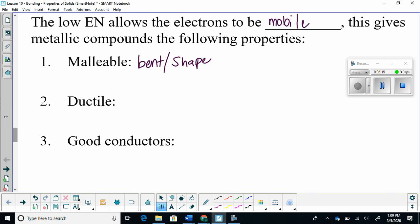We can bend and shape the metal. So things like wiring, that's why it's easy for us to bend copper wire, because it has mobile electrons.